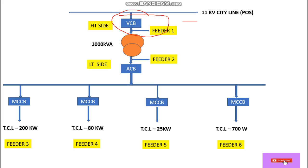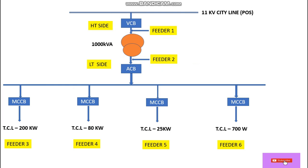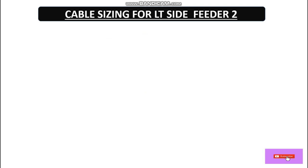This is the single line diagram. The HT cable size we have already calculated. Now we are going to calculate the cable size for the LT side, meaning the secondary side of the transformer to the breaker — the ACB — and then from the ACB to the LT panel. This is feeder one, and here is feeder two. We are going to calculate the cable size for feeder two.